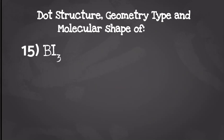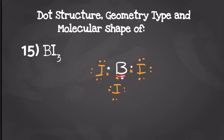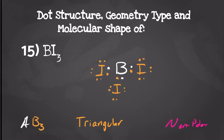For our next one we have boron triiodide. Boron is going to have three valence electrons and each iodine is going to have seven, so when we draw our dot structures it should look something like this. Boron only has three valence electrons so it's only going to be able to form three bonds, and each iodine is going to have eight valence electrons. One center atom with three things attached to it gives us a geometry type of AB3, which gives us a molecular shape of trigonal planar. And just like BCl₃, all of those iodines are going to be as far away from each other as possible on the same plane, making a non-polar molecule.